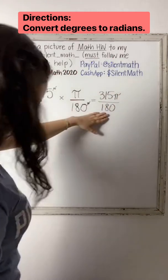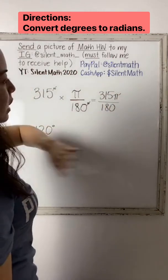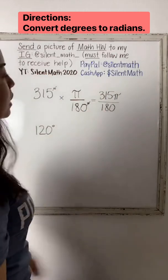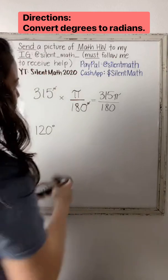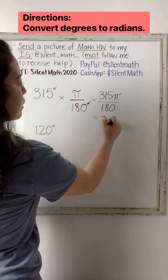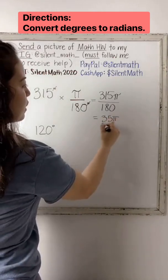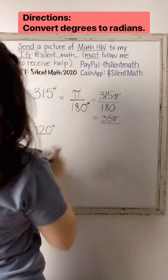This is a fraction, so we want to simplify. You can usually simplify by 9. And so let's do 315 divided by 9, you're going to get 35 pi, and then divide this by 9, we get 20.